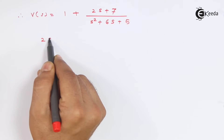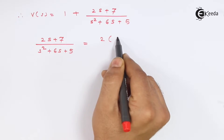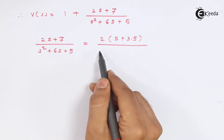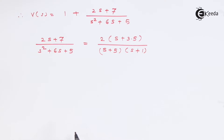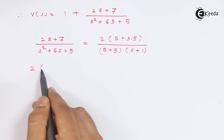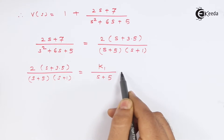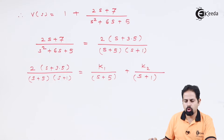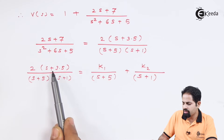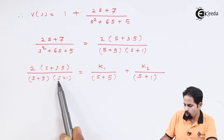Let us put the factors. Now we find the residues for this function. There are two residues to be found, but for that we need a pole-zero plot. So we'll draw the pole-zero diagram. You can see there is one zero at s equal to minus 3.5, and at s equal to minus 5 and s equal to minus 1, there are two poles.